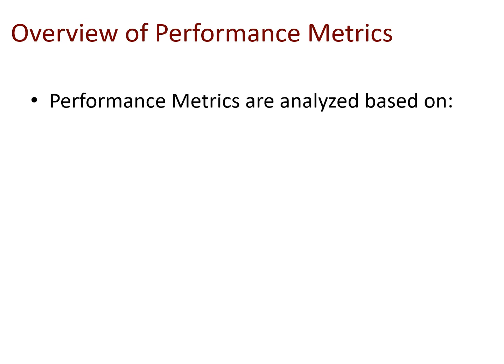Performance metrics are analyzed in a couple of ways. One is comparing them to benchmarks — a benchmark might be an industry average, an industry best practice, or a company average or best practice. For example, an industry average for inventory turns may be six, and you analyze your location and you're at seven, so you have a higher inventory turn than the industry average. Another thing we might compare metrics to are trends — for example, if your inventory turns were three a couple years ago, four last year, five earlier this year, and now you're at six, it's trending in the direction of higher inventory turns.